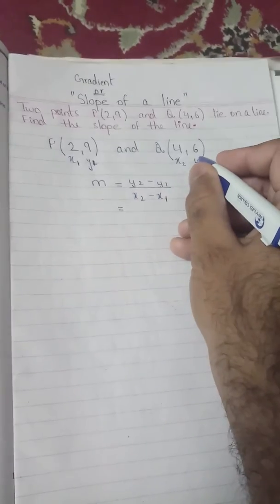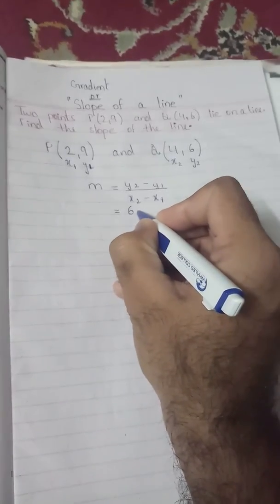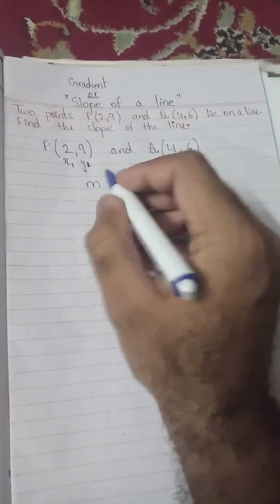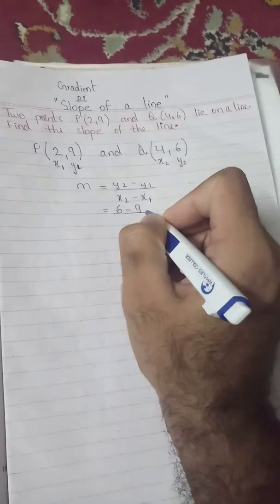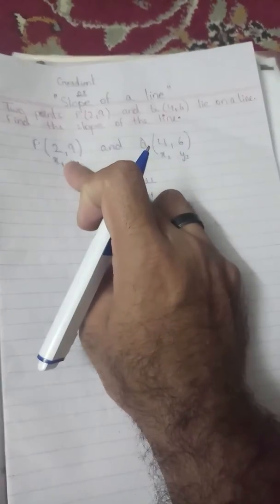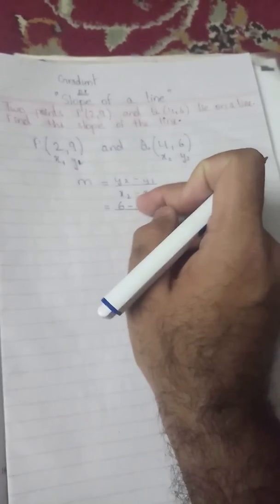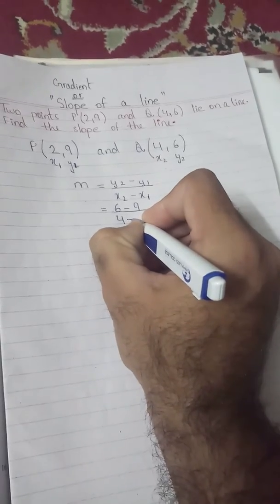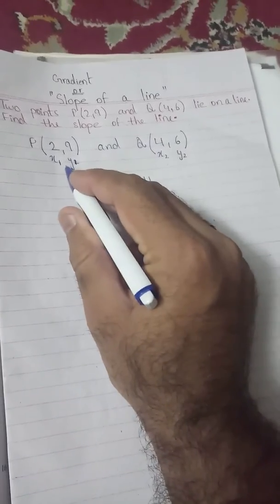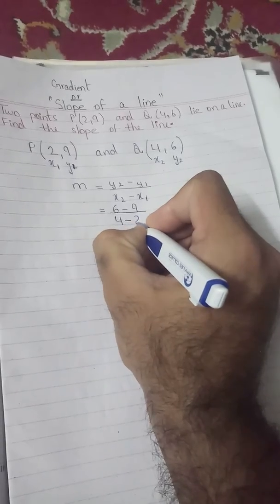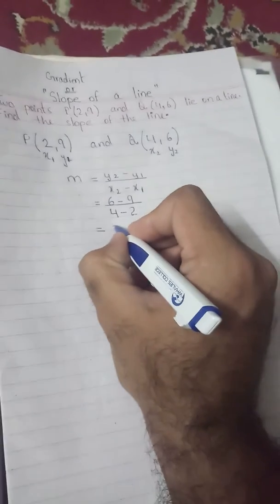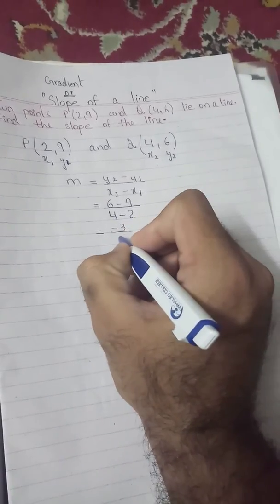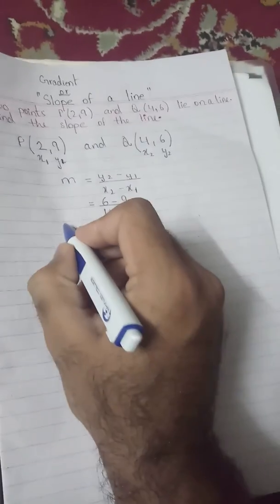Y2 is 6, so I write 6 in place of Y2, minus Y1 which is 9. Then X2 is 4, minus X1 which is 2. So we get 6 minus 9 in the numerator and 4 minus 2 in the denominator. That gives us minus 3 over 2, so the gradient of this line is −3/2.